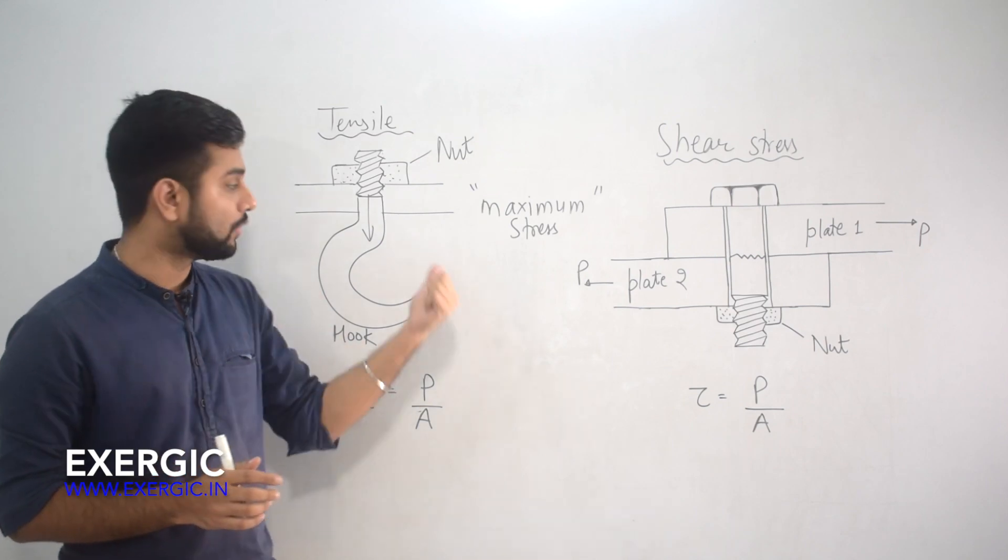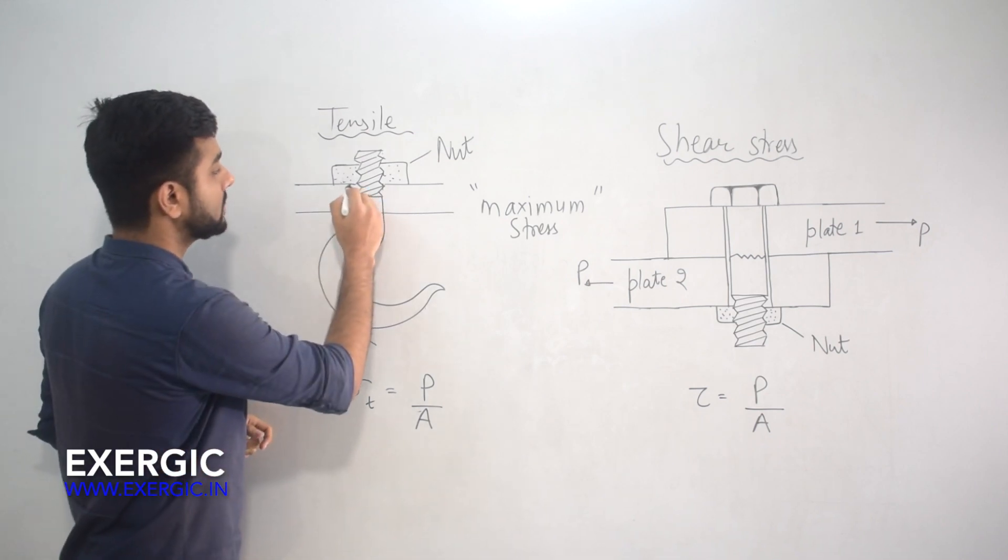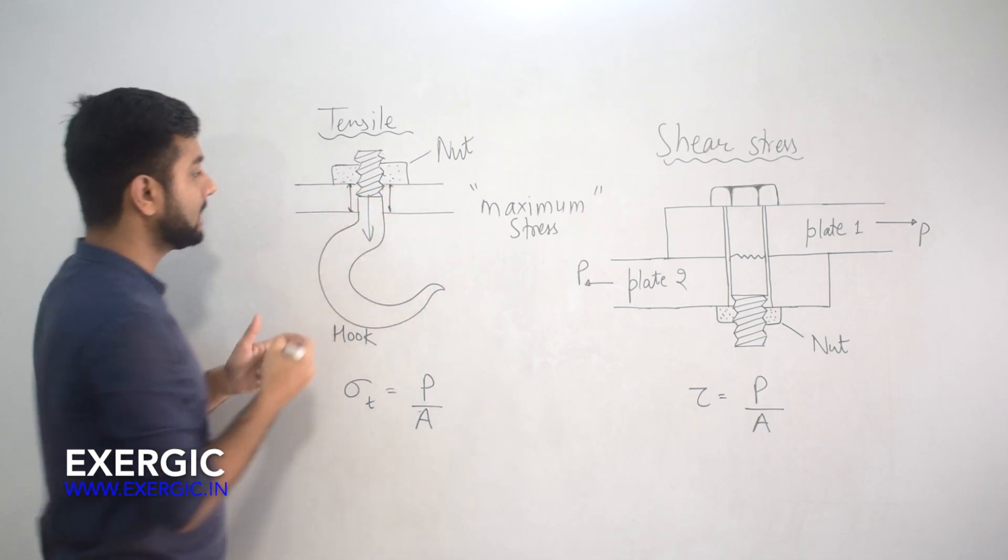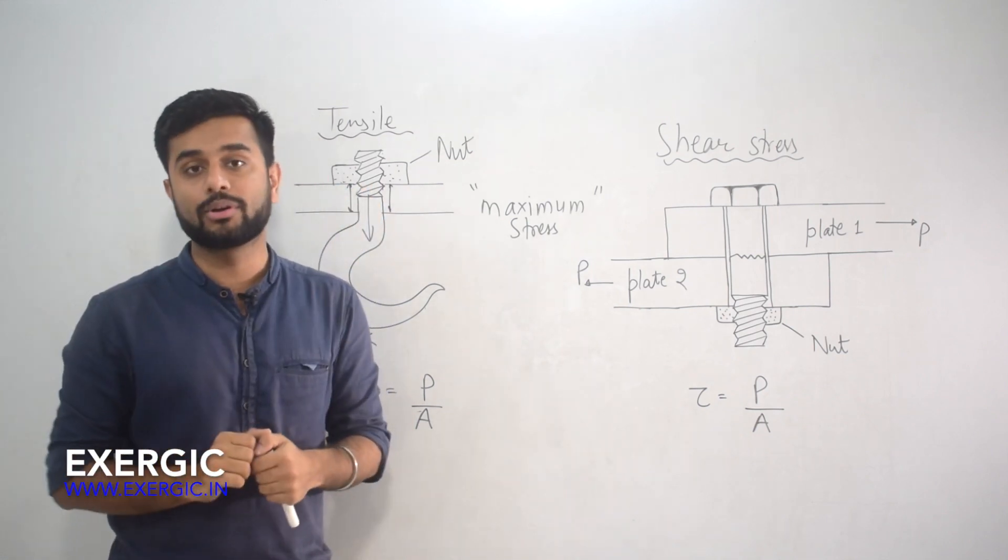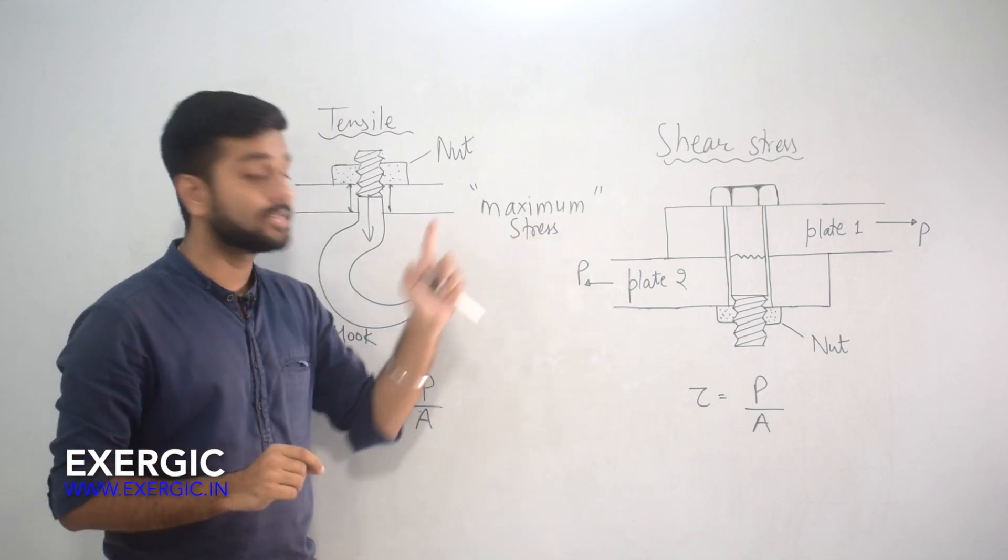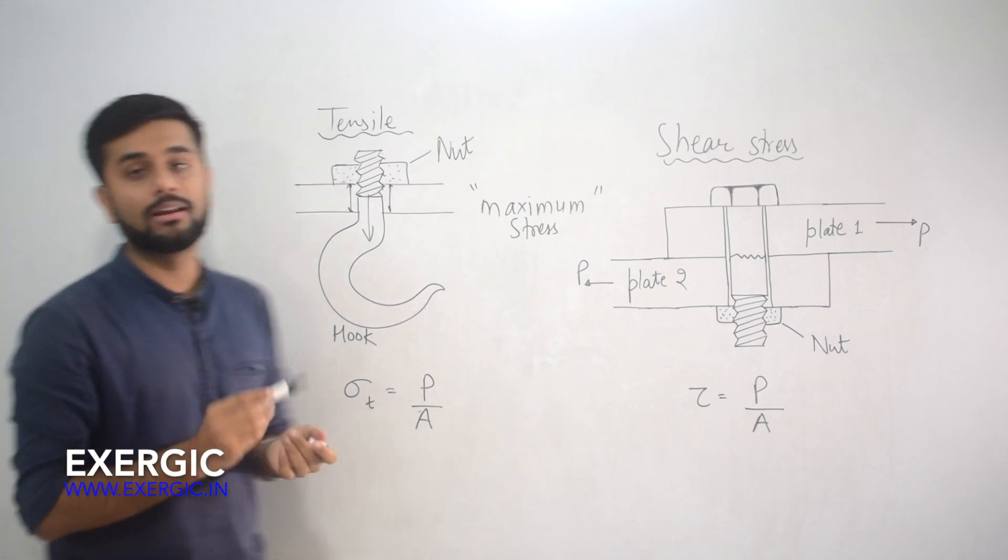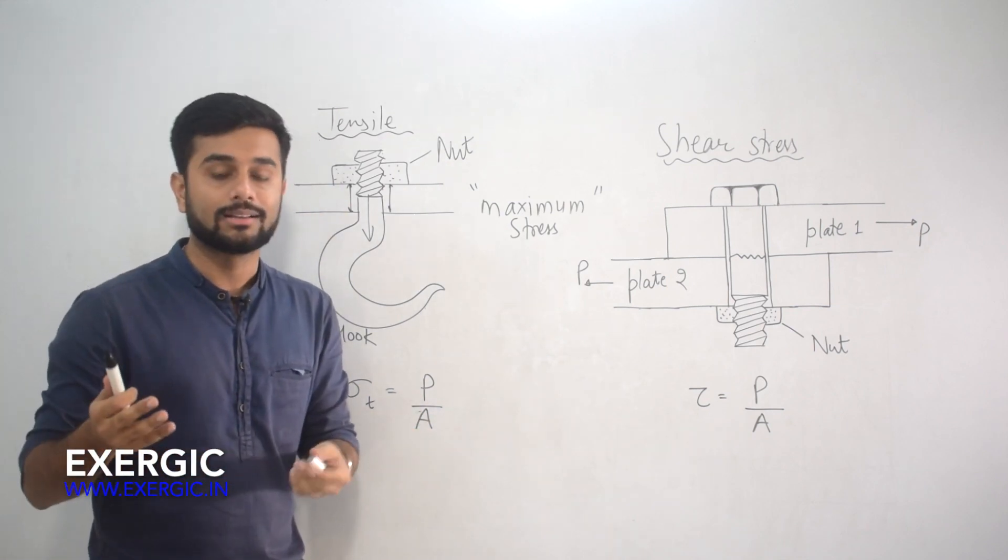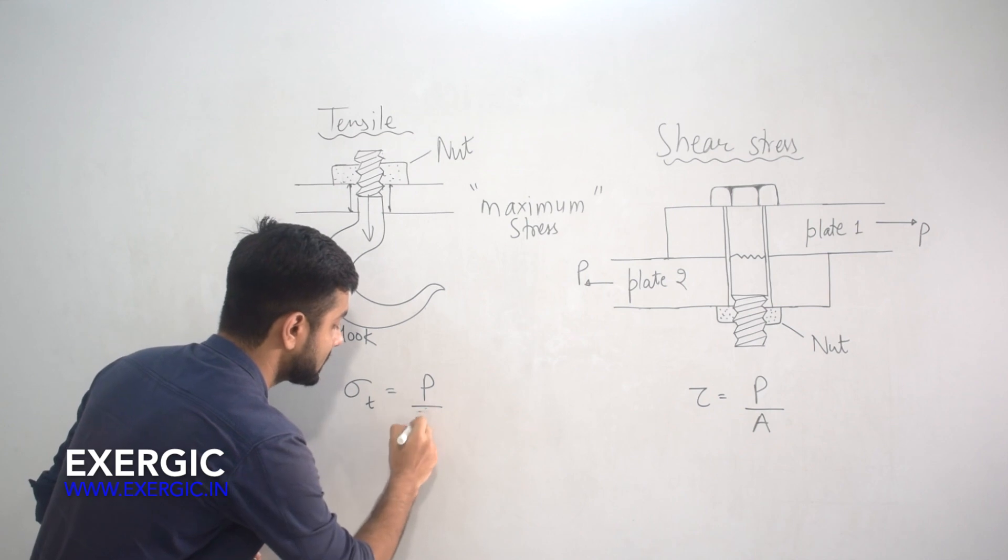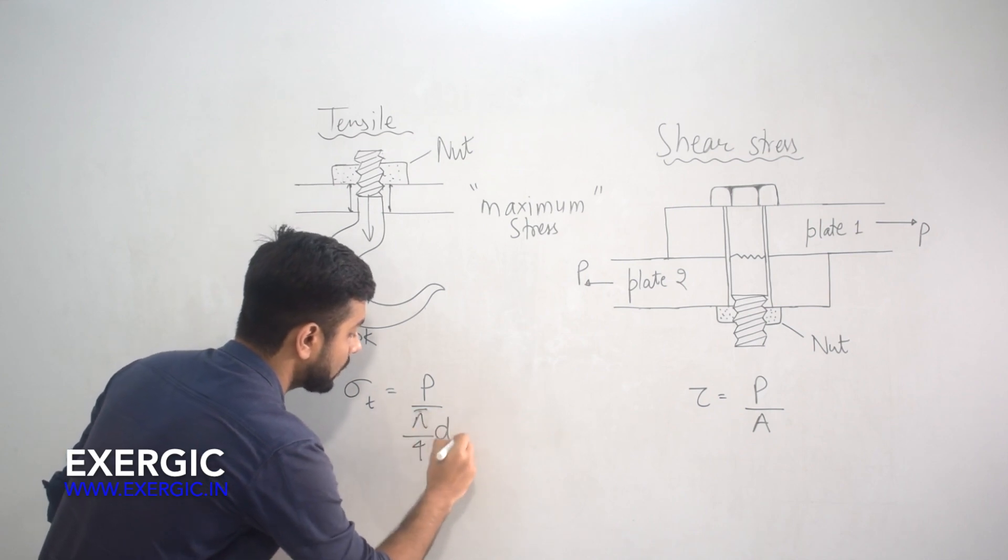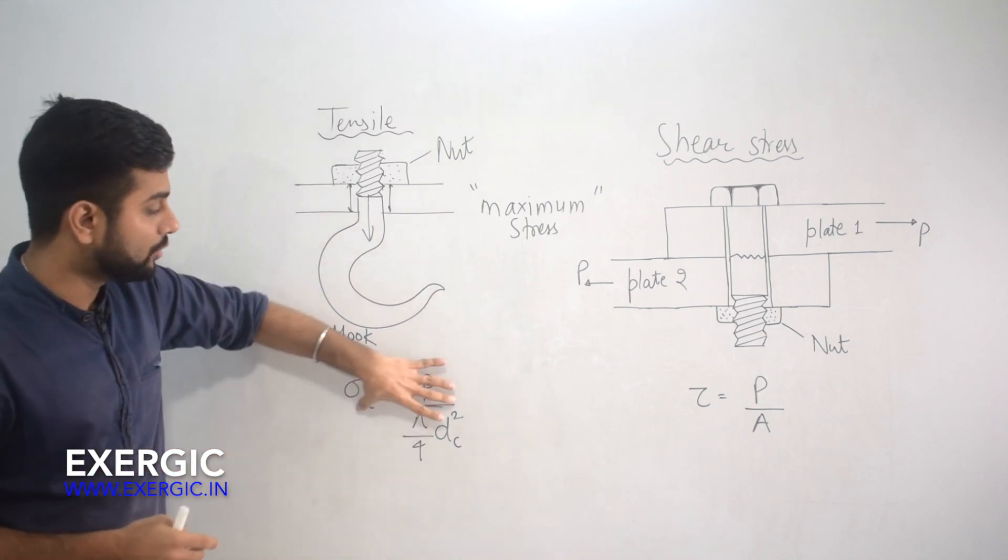This thought process is correct for specifically this case, because here the load P which is being applied is acting throughout this section, in unthreaded as well as threaded region. And hence, when you need to decide the maximum stress, then the minimum area which is available in the zone where the load is acting, that you need to take. And that is the area defined by core diameter. So here you can simply take it as pi by 4 core diameter square and you will get the answer.